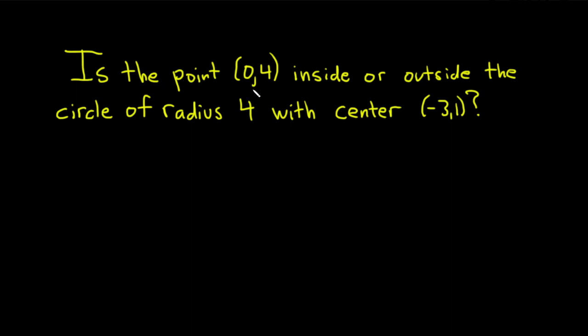So the question is, is the point (0,4) inside or outside the circle of radius 4 with center (-3,1)? And there's a hint in the problem that says to draw a picture.